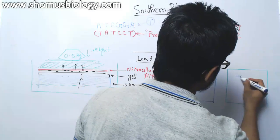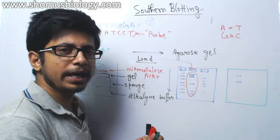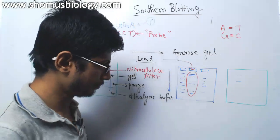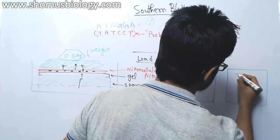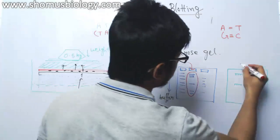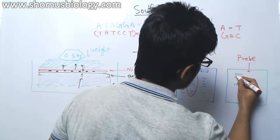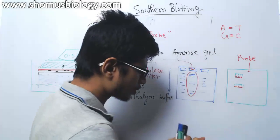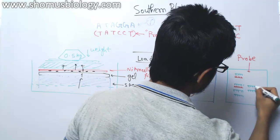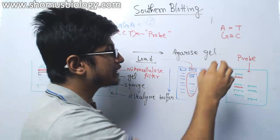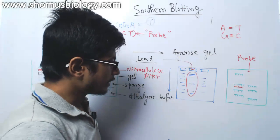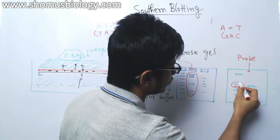We add a denaturation buffer to denature one of the strands of the DNA so that we have only a single strand present. Then we apply the probe. The probe is complementary to the target DNA. Among all the DNA fragments present, the probe is only going to bind with the target DNA — only one of them, which is the target.